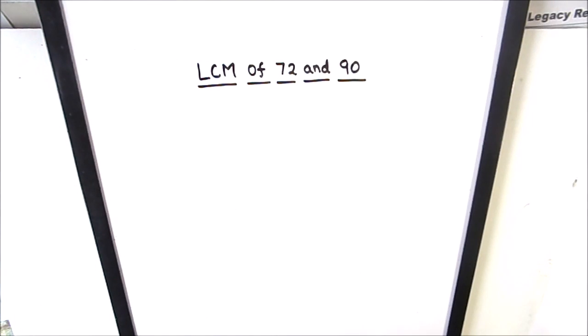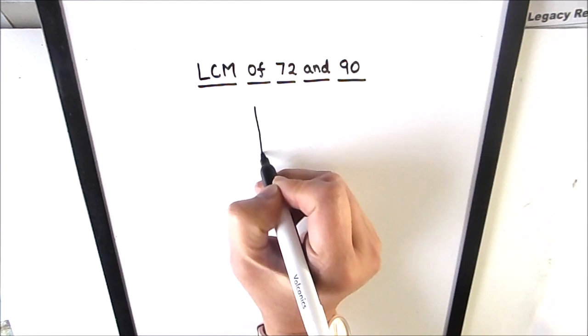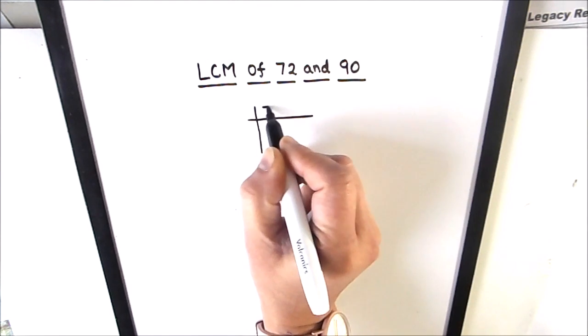Hello students, in this video we are going to learn how to find the LCM of 72 and 90 using prime factorization method. In this method we divide numbers using prime numbers and find the factors of the number.